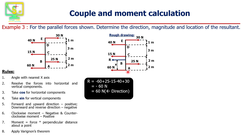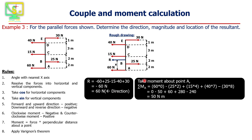Now let's calculate the moment of the system about point A. For the 60 newton force, this is zero as it has no perpendicular distance — it won't rotate the system. The 25 newton force will rotate the system in the clockwise direction, so we take it as negative, and it is at a distance of 2 meters from point A: minus 25 into 2. The 15 newton force will rotate the system counterclockwise, so it is positive, and the 30 newton force is at a distance of 4 meters from point A.